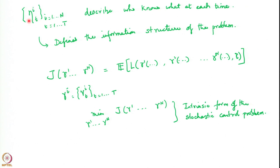We can now talk about what various types of functions or function classes lead to various types of information structures. The simplest of these is what is called a static information structure. A static information structure leads to a problem often called a static team. One uses the word 'team' to describe this problem because there are really n agents with a common goal. A team formally is comprised of n agents with a common goal but with possibly different information.